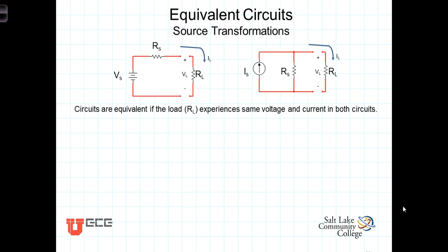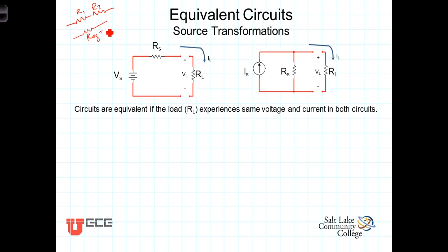In our previous work, we have seen where equivalent circuits can be derived — where we can condense devices into less complicated circuits using the concept of equivalency. For example, when we had two resistors in series with each other, R1 and R2, we could replace those two resistors with a single equivalent resistance Req, which was equal to R1 plus R2.